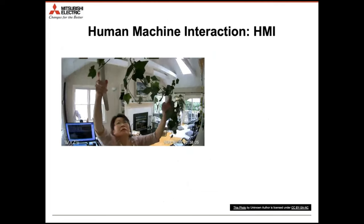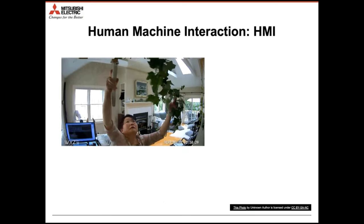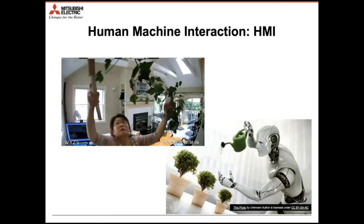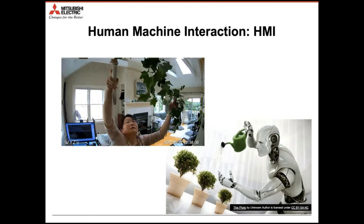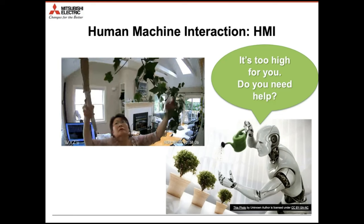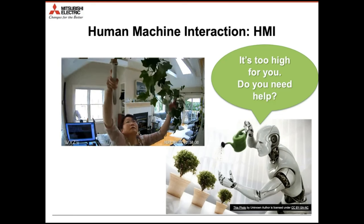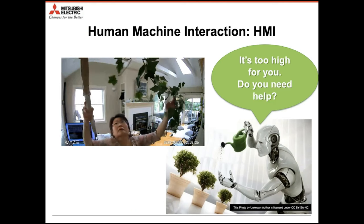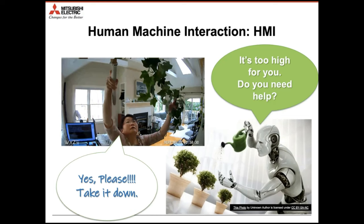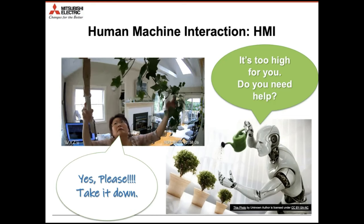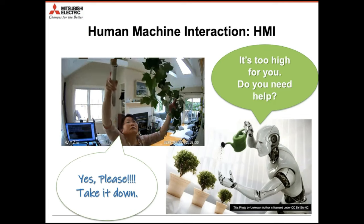What is human-machine interaction? For example, I'm taking care of the greens next to me and the robot is pouring water to the greens. If the robot can recognize I'm having trouble, it proactively asks me, 'It's too high for you, do you need help?' And I say, 'Yes, please take it down.' This conversation can happen if the system understands what's going on surrounding us.